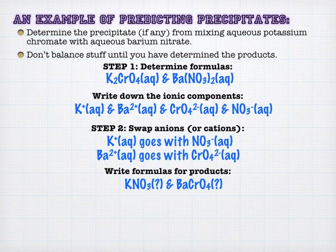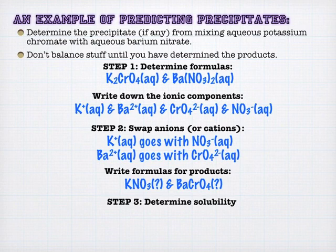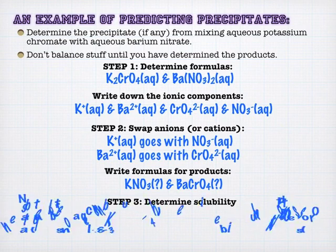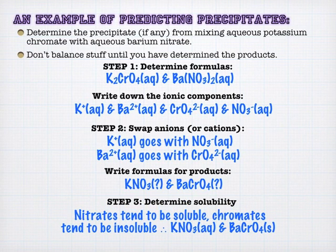So you've got potassium nitrate and barium chromate. Well, potassium nitrate is obviously going to be soluble based on the rules we have. Chromates can be soluble, but they're insoluble with barium. And so we actually do have a driving force here. We have a reaction.